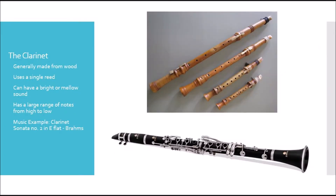The next instrument we're going to talk about is the clarinet. The clarinet is generally made out of wood and uses a single reed. The clarinet evolved from an instrument called the chalumeau, which we see an example of in the top picture. Later on, keys were added along with a register key that increased the range of the instrument and evolved it into what we now call the clarinet. The clarinet can have a bright or mellow sound and has a large range of notes from high to low. The musical example you're about to hear is the Clarinet Sonata Number Two in E-flat by Brahms.